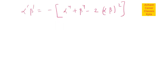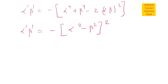तो इसको हम क्या लिख सकते हैं? minus sign के साथ यह आपका बन जाएगा minus of (alpha² - beta²)² का whole square. यही formula बन रहा है, which is less than zero. क्योंकि यह negative sign है, तो यह less than zero होगा.